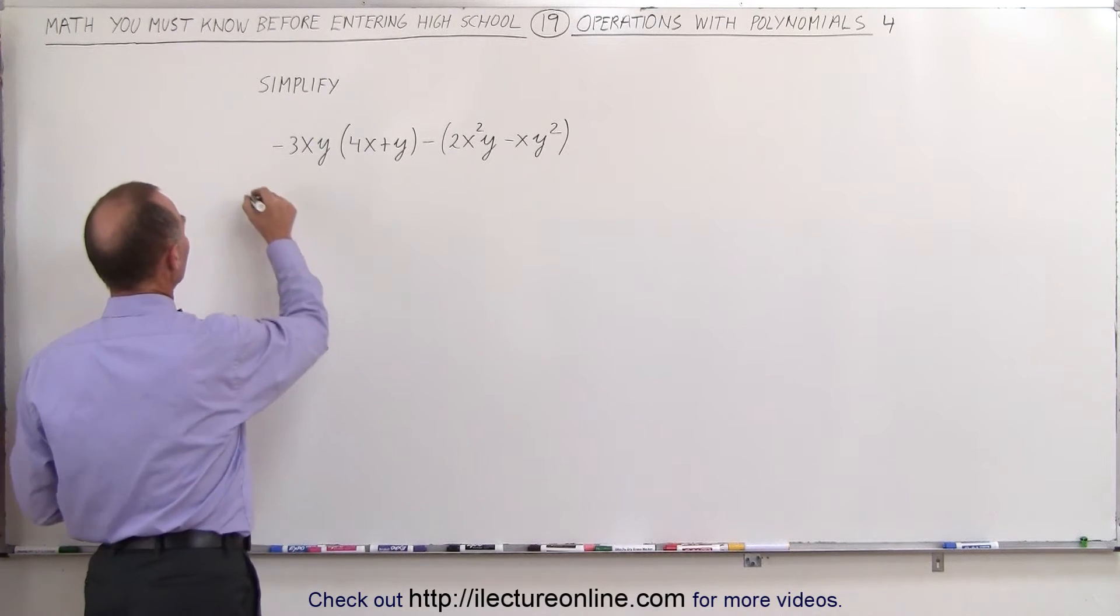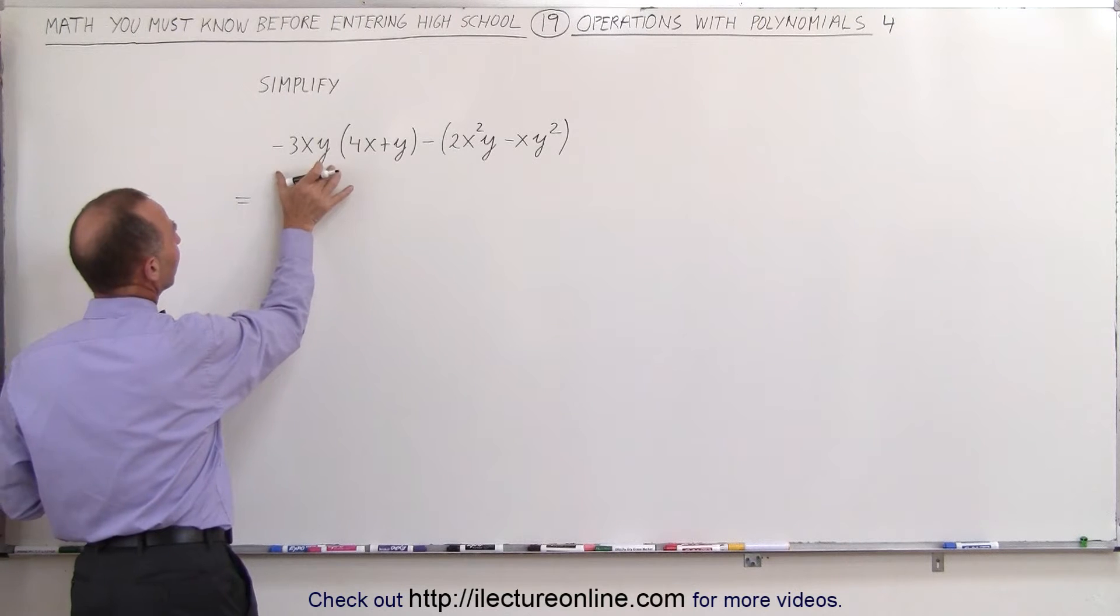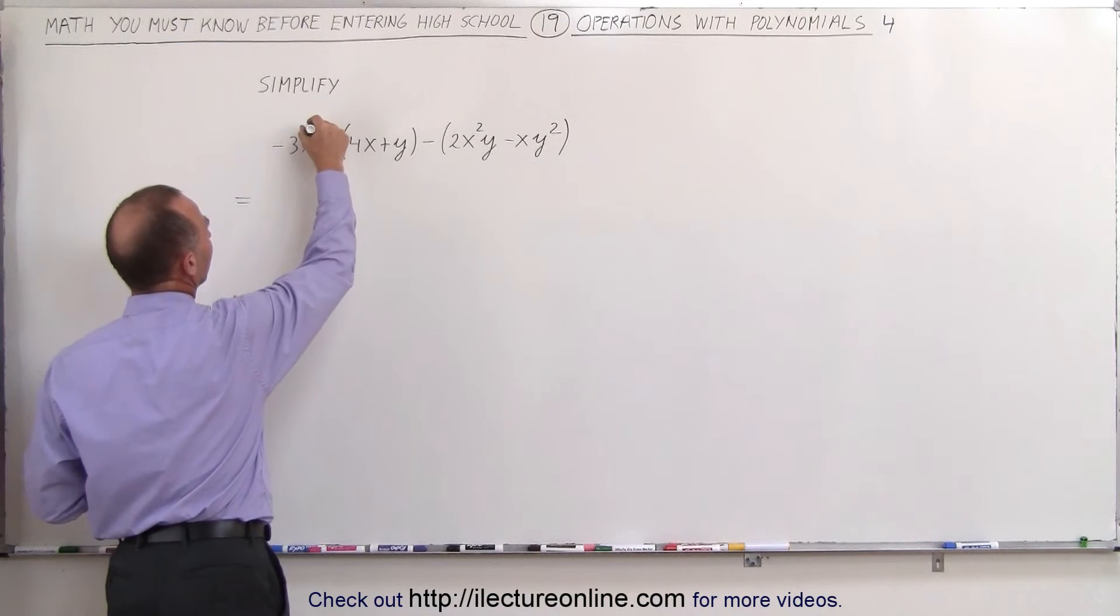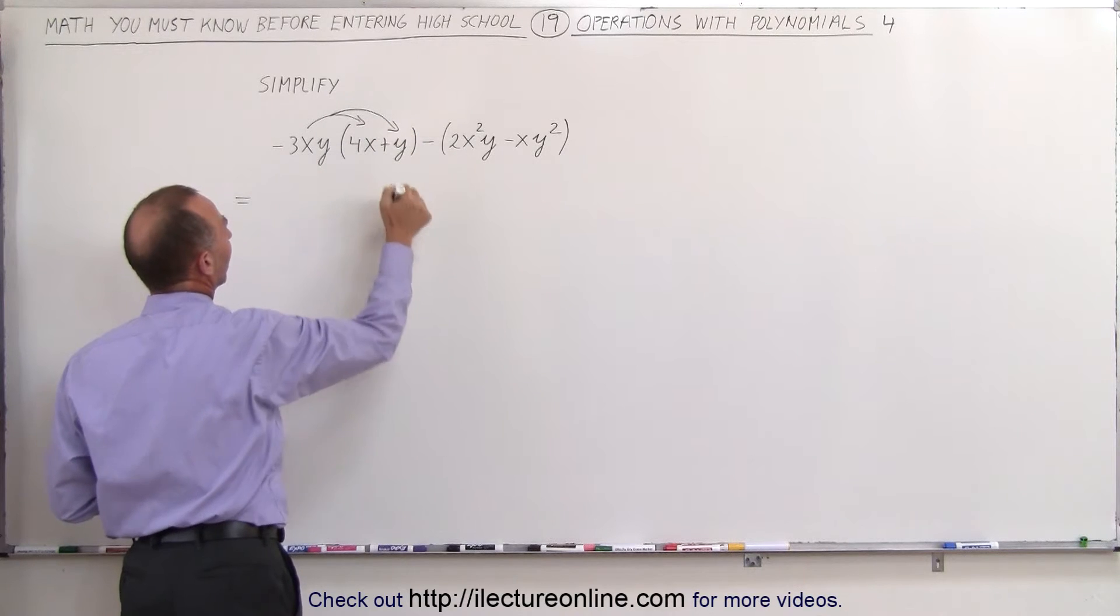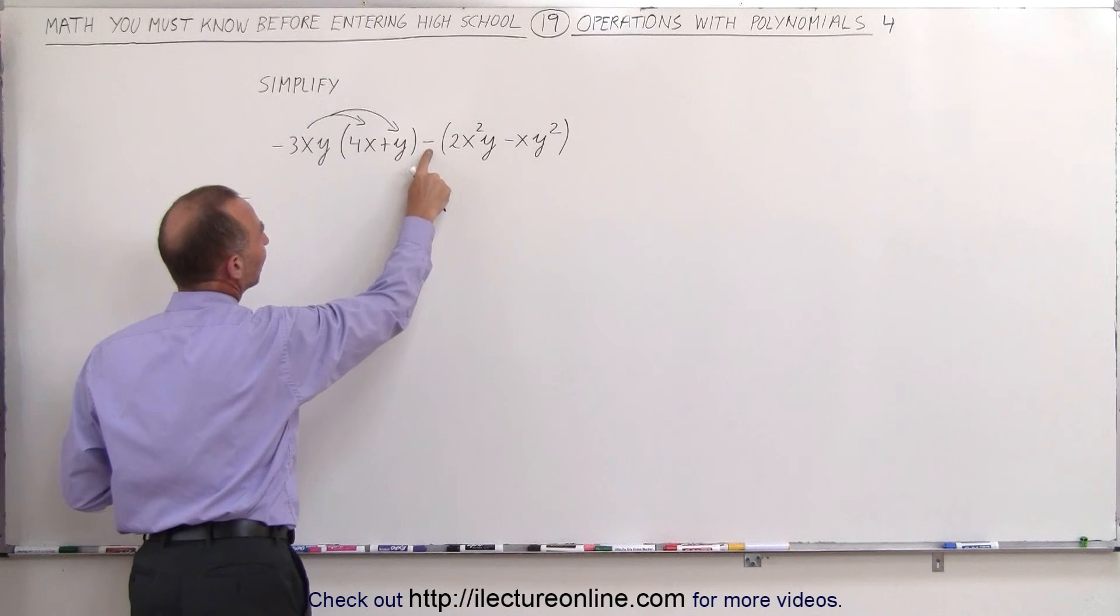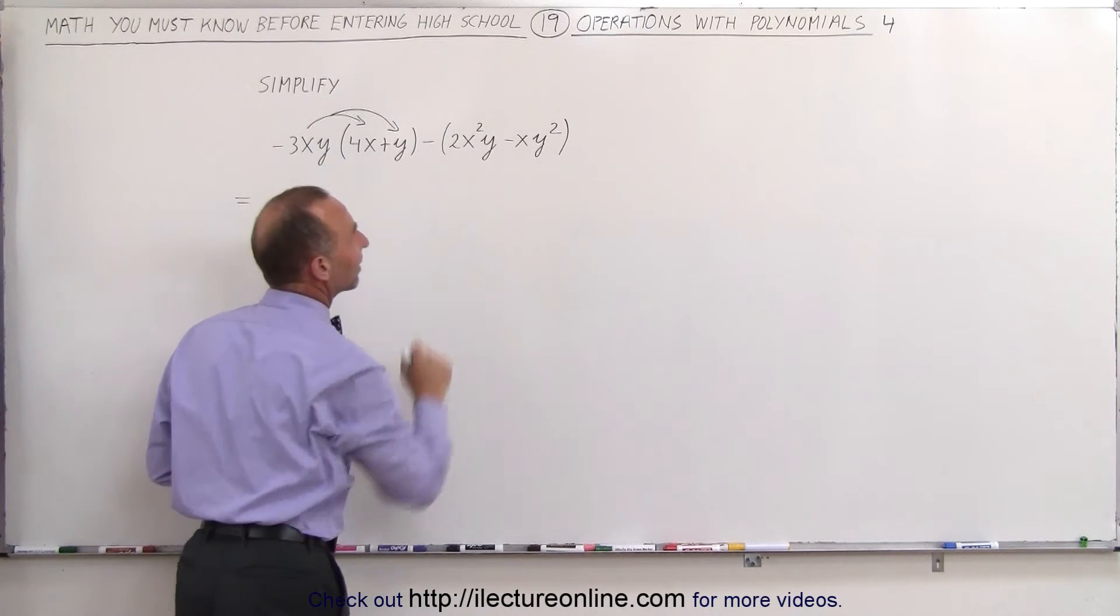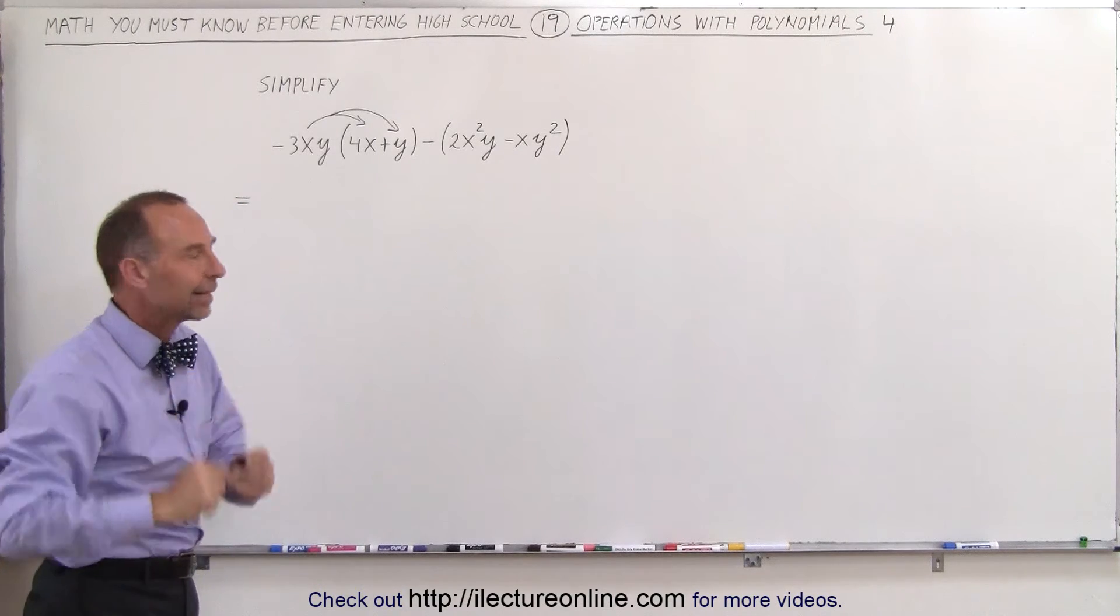The way that's done is as follows. We multiply the minus 3xy, which is a single term, first times the 4x and then times the plus y. And then we apply the negative sign here, changing the sign of everything inside of parentheses. And then we'll add like terms together.